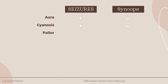Number 3: Pallor. Presence of pallor during the episode goes more in favor of syncope. Extreme or death-like pallor, if noticed during the episode, means the patient must be evaluated in detail for cardiac syncope, for diseases such as cardiac arrhythmias, hypertrophic obstructive cardiomyopathy, and left ventricular dysfunction.